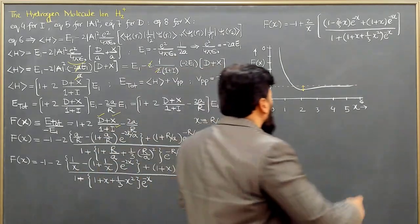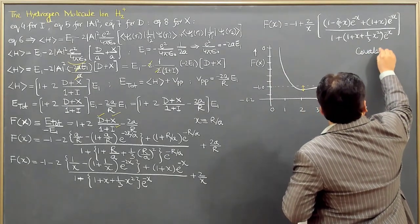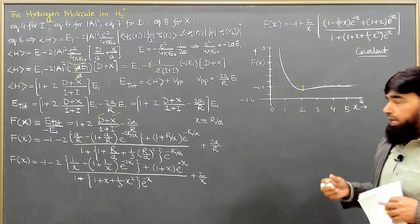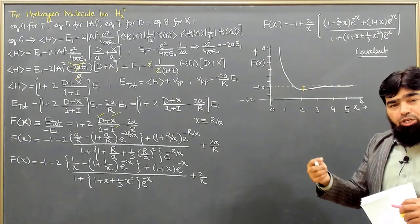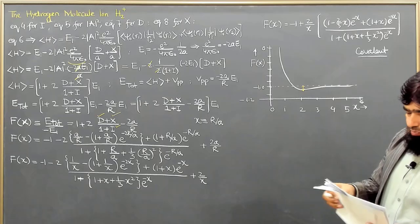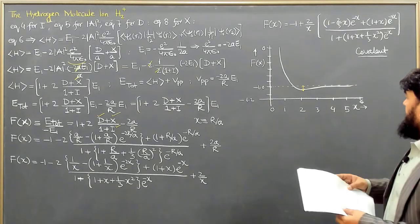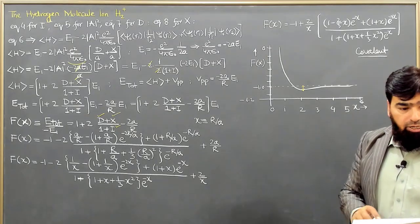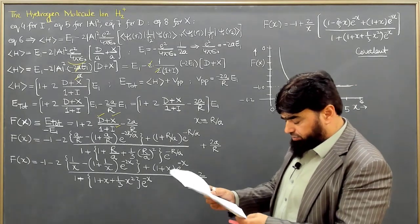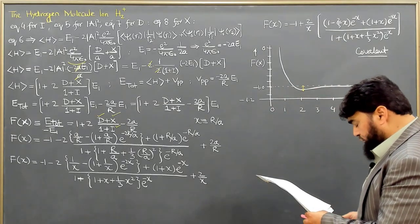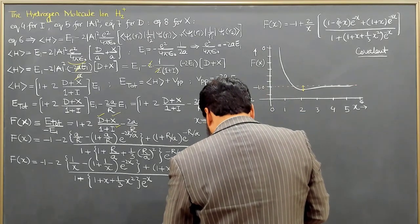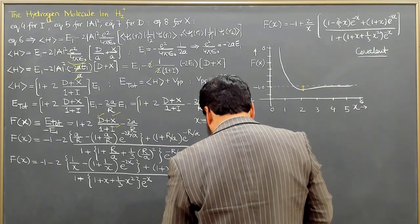So this portion that we are having here, the bonding—when it becomes less than minus 1, we are having the bonding, and the bonding nature is covalent in nature because the electron is shared between the two protons. And here the energy comes below a neutral hydrogen atom plus a proton with that system.